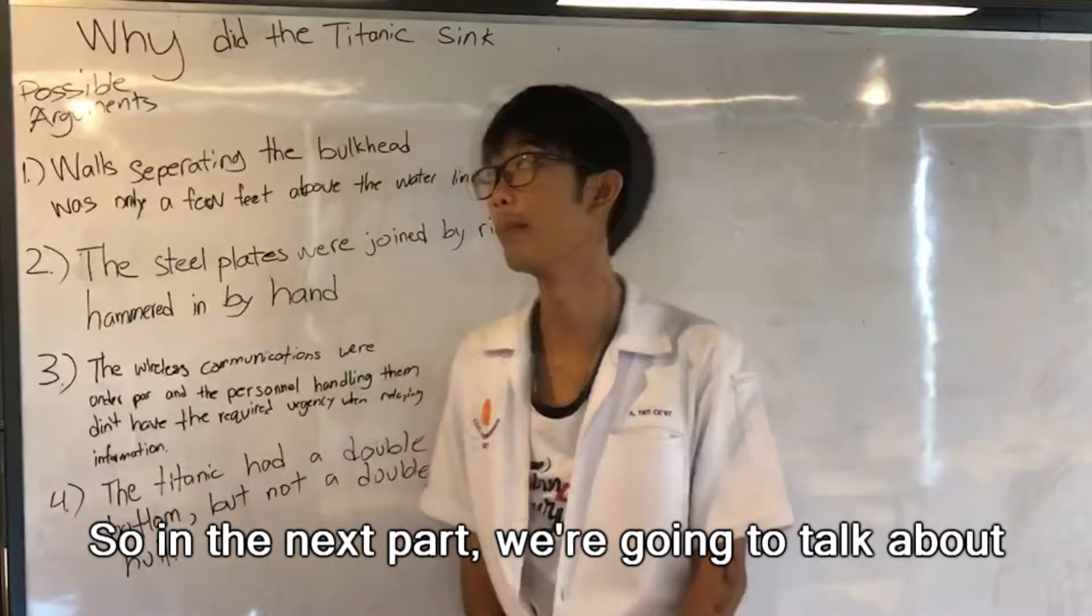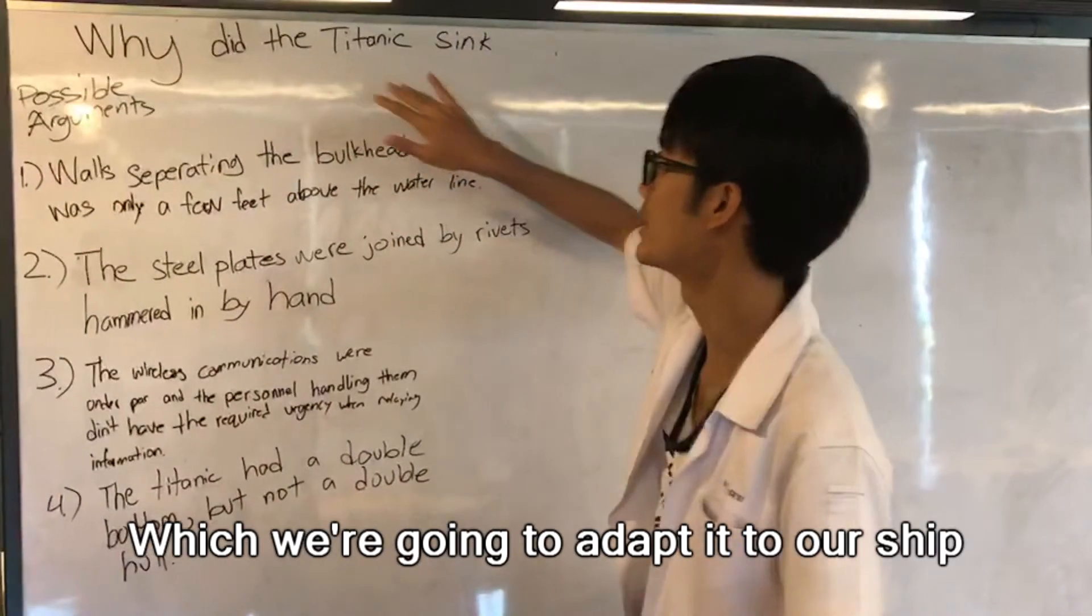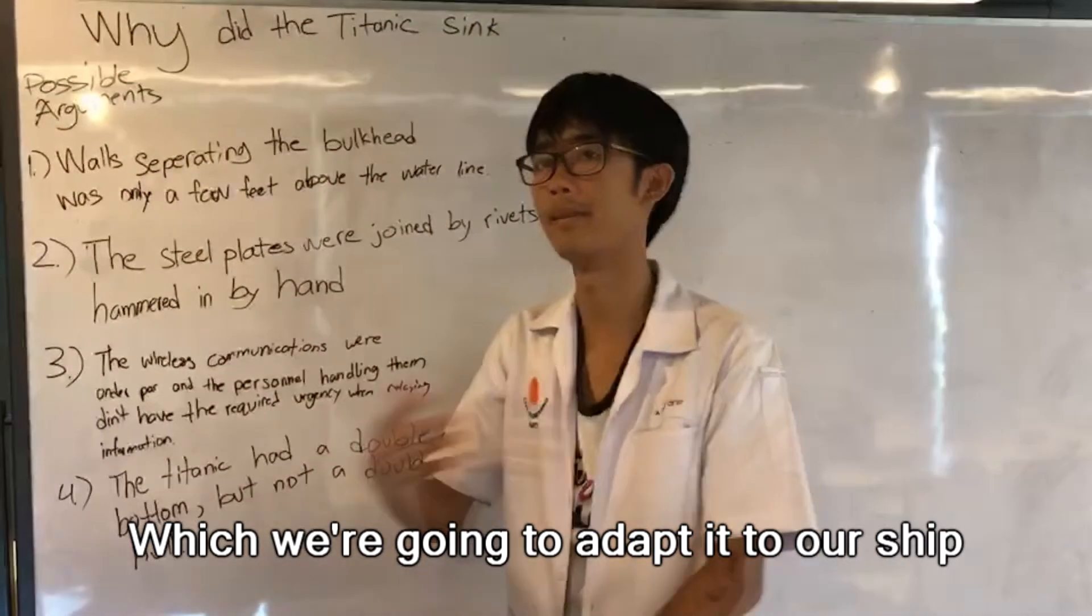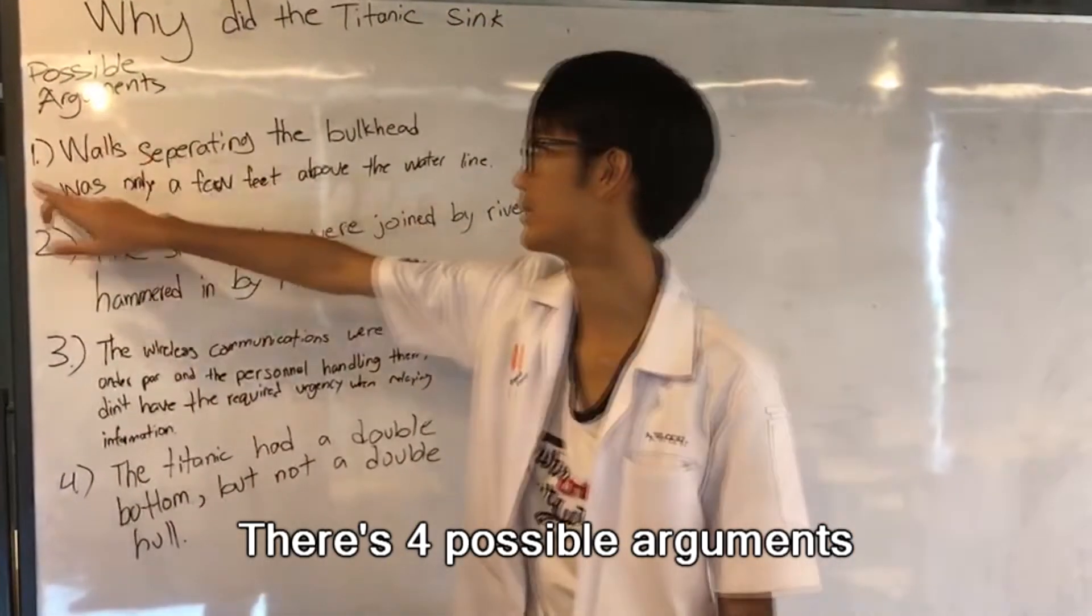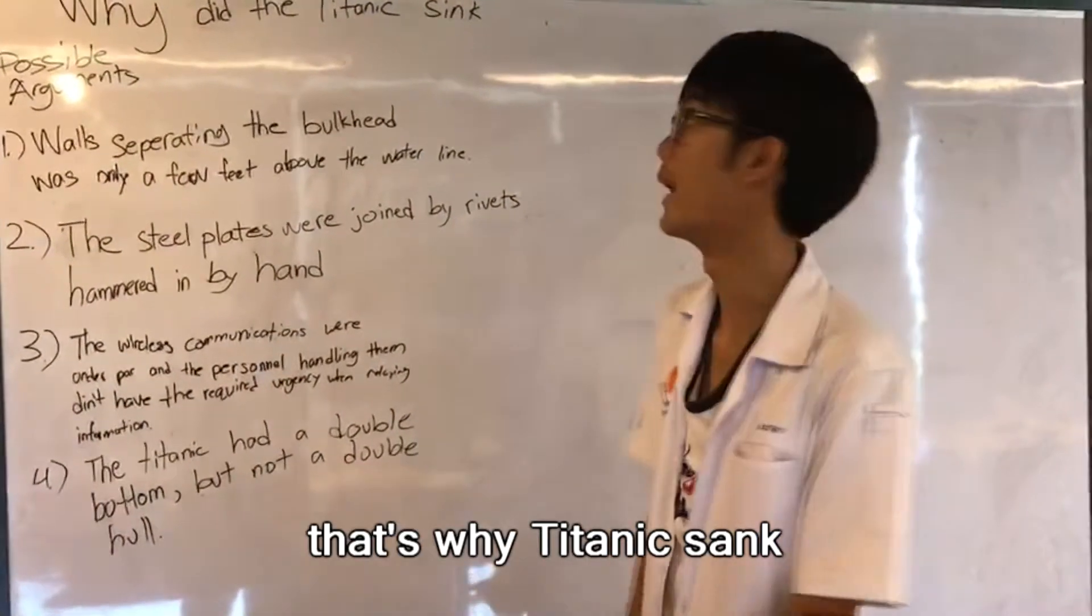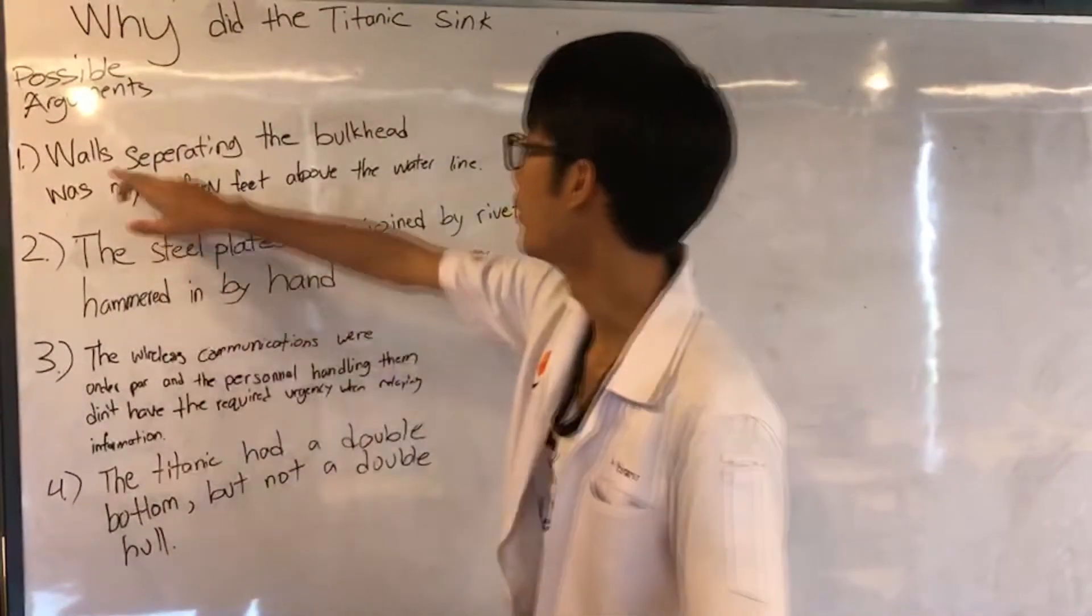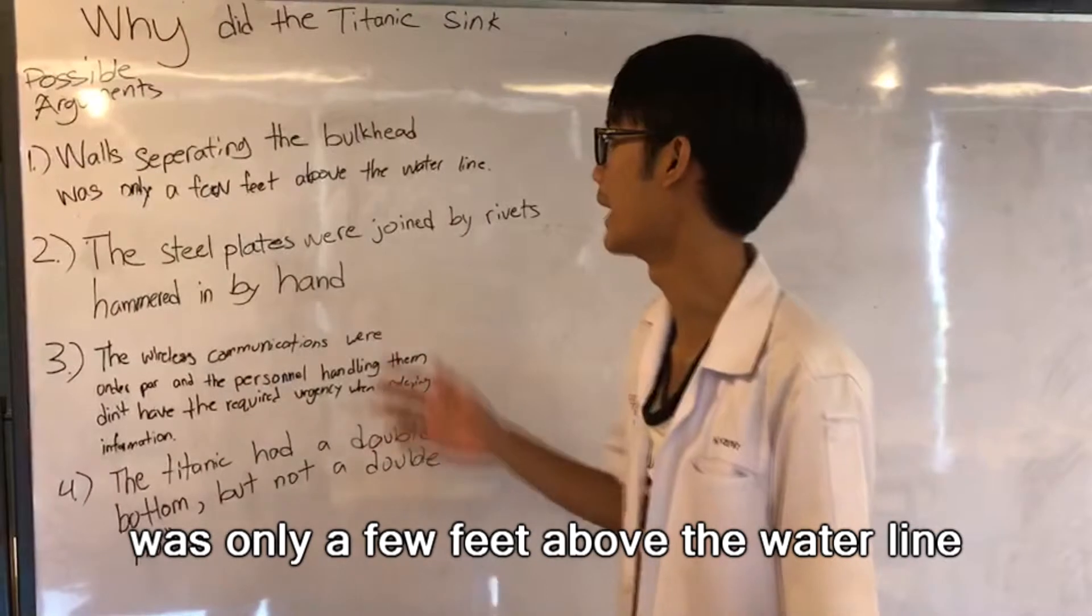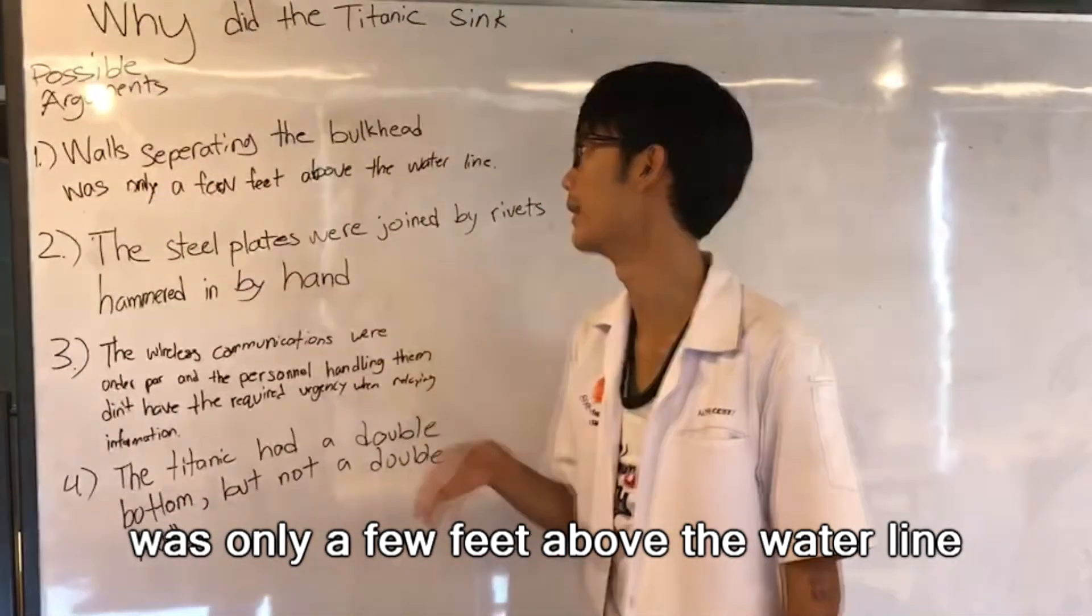So in the next part we are going to talk about why did the Titanic sink, which in this topic we are going to adapt it to our ship. There's four possible arguments that why Titanic sank. The first one, the water separated in the bulkhead only has a few feet above the waterline.